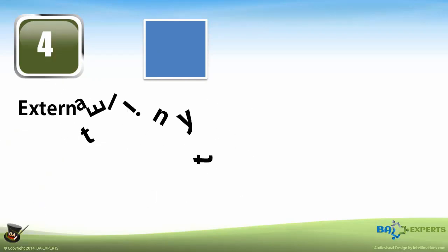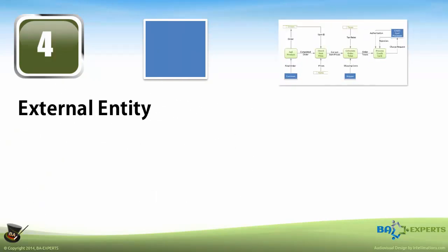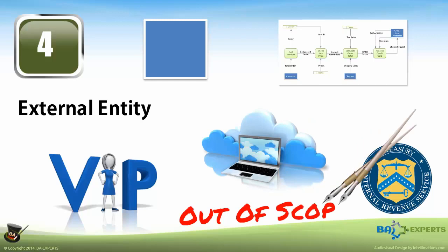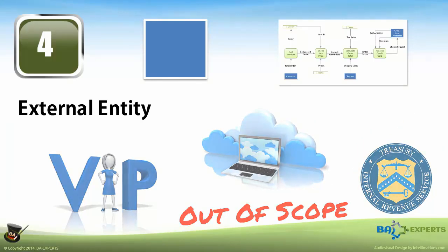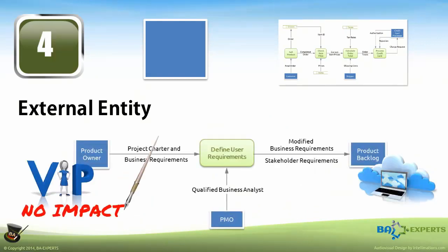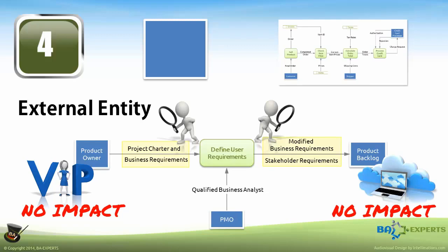A simple square, with or without an optional shadow, represents an external entity. In the world of data flow diagramming, an external entity represents a person, organization, or application that is out of scope from the perspective of the DFD or the project. Specifically, it implies that the represented object is not going to be analyzed or impacted by any project using this diagram, but the interface to the object has to be analyzed.